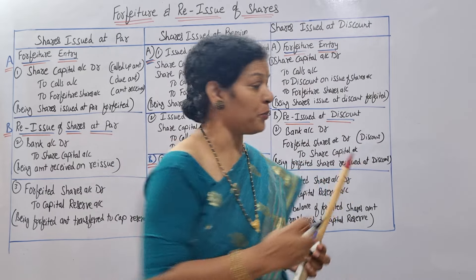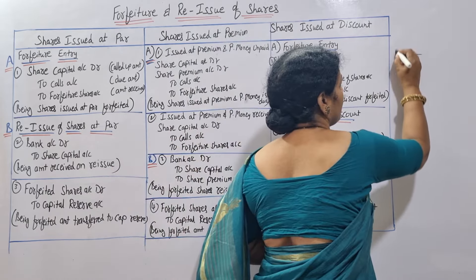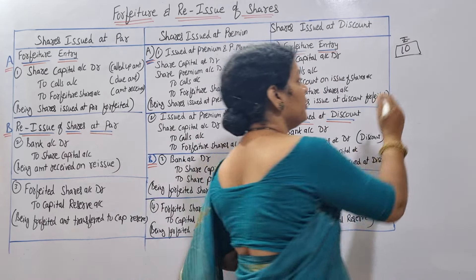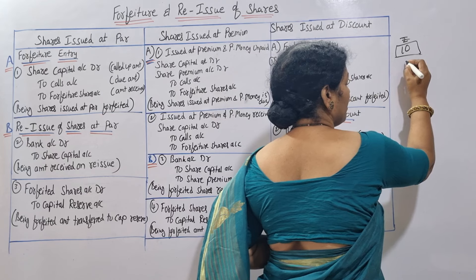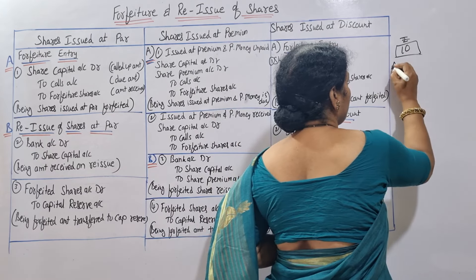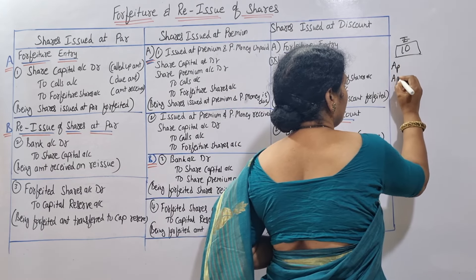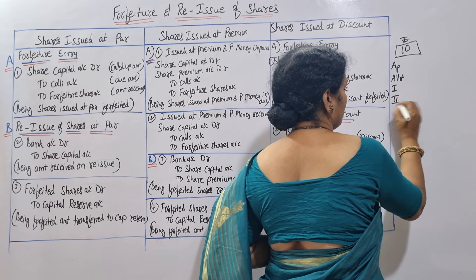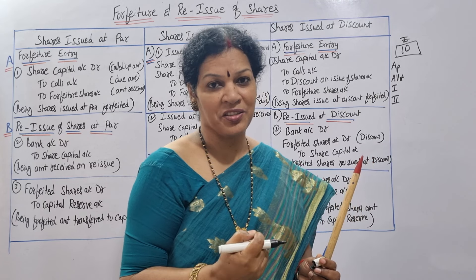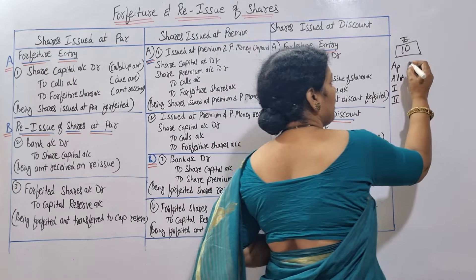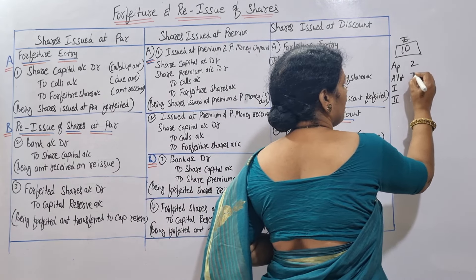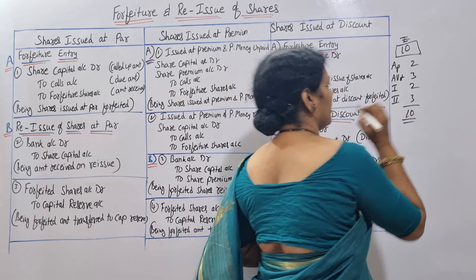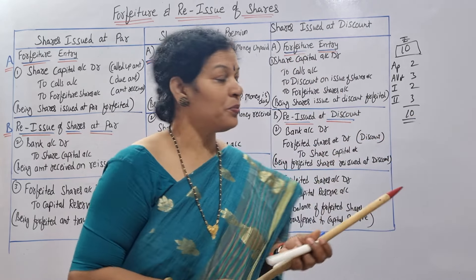For example, we have issued shares at par - share value is 10 rupees. How we have issued: first we are collecting in steps - application, allotment, first call, and second call - four steps to get back this 10 rupees. Application: 2 rupees, allotment: 3 rupees, first call: 2 rupees, second call: 3 rupees - total 10 rupees.